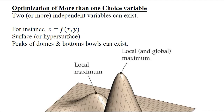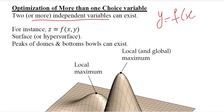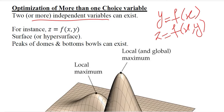This video guides us about the optimization process when there are more than one choice variables — that is, more than one independent variable. When we have a function with only one choice variable it is easy to solve, but when there are more than one independent or choice variables it becomes slightly complicated.